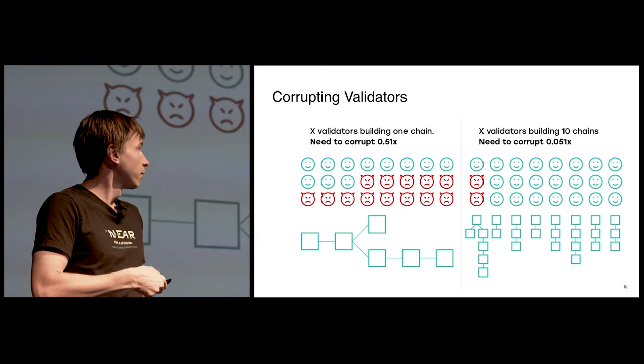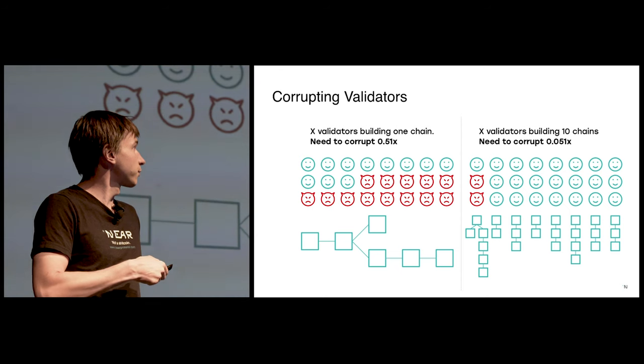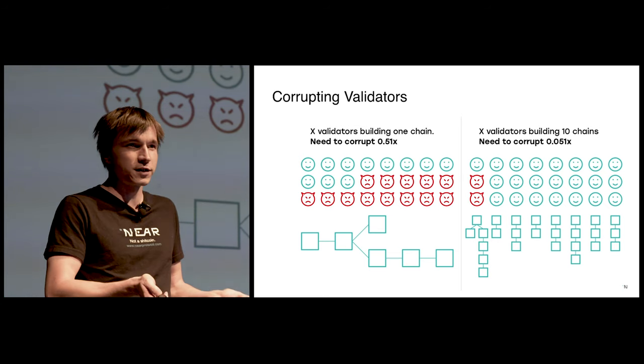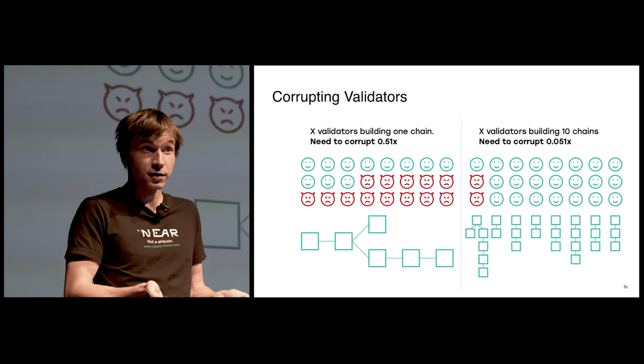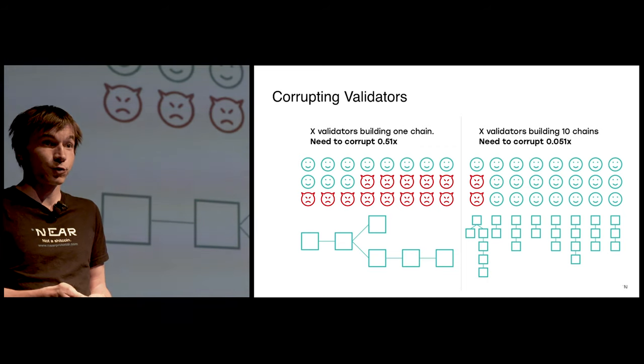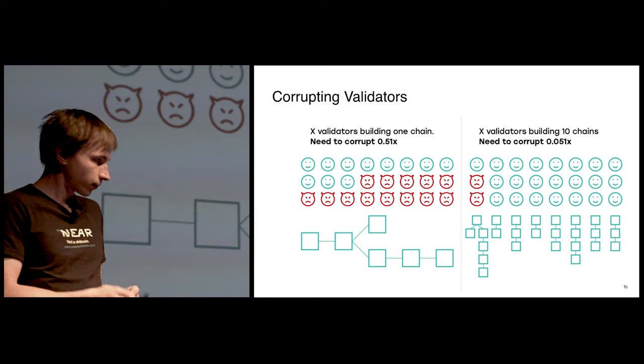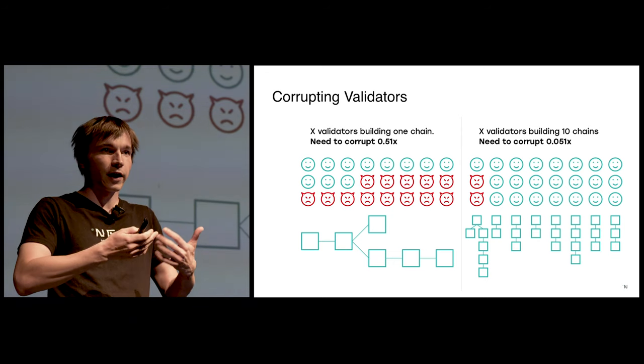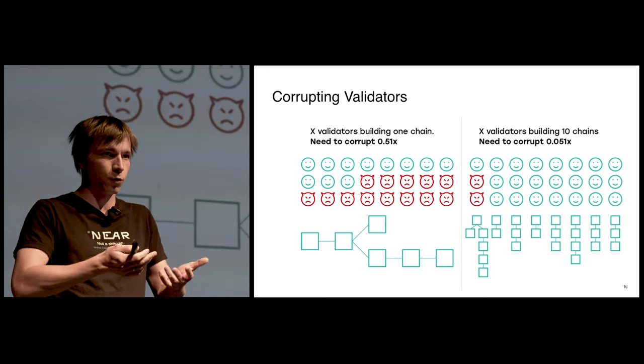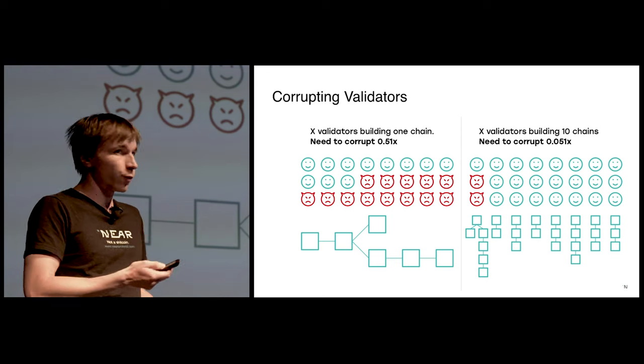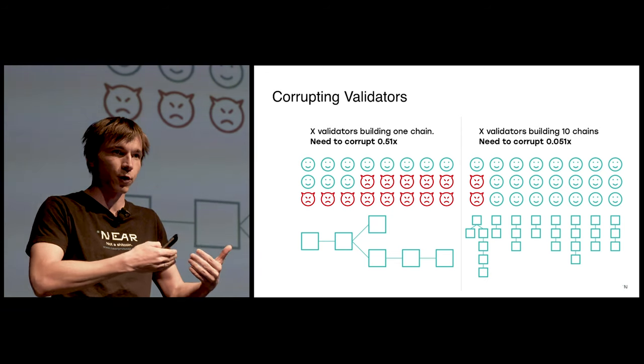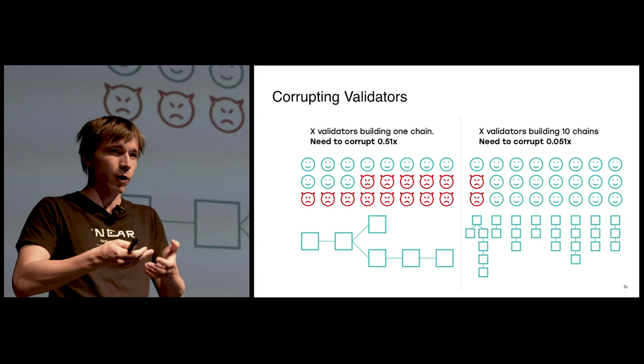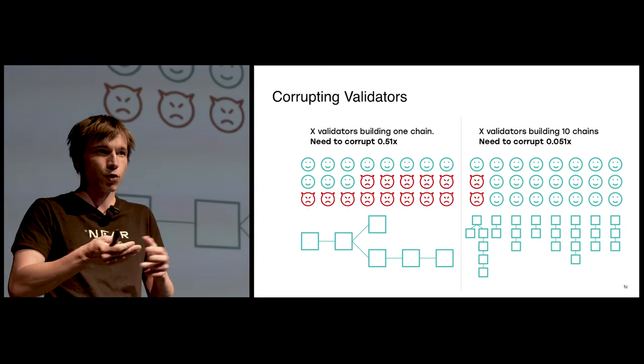That means that validators are split between them. And now if you want to corrupt one blockchain, you only need to corrupt 51% of the people who validate it, which is, if you have 10 blockchains, that becomes 5% of people. If you have 1,000 blockchains, you need to corrupt 0.05% of all the validators, which doesn't sound very hard. But that would only work if you can actually control where your hash power or stake goes, or you have to be able to identify people in a particular shard and somehow corrupt them. You would either bribe them or hack them in some way.